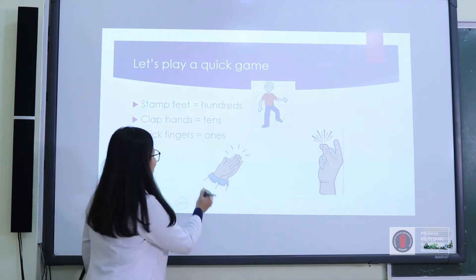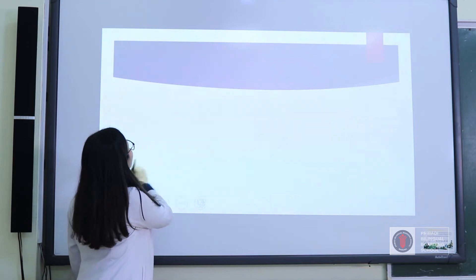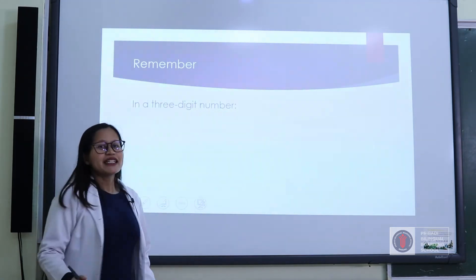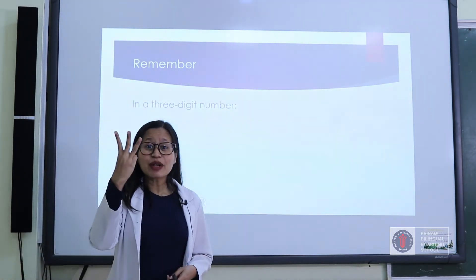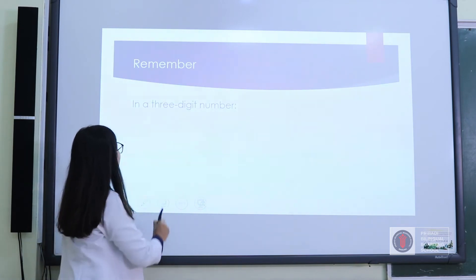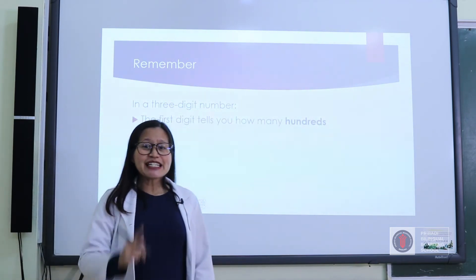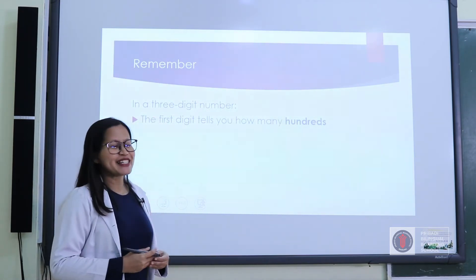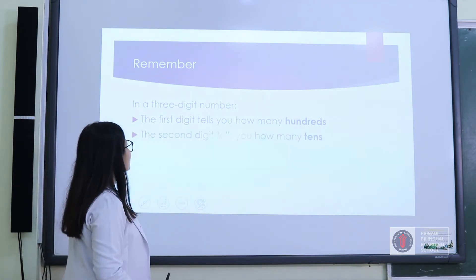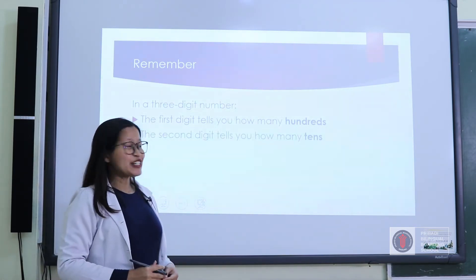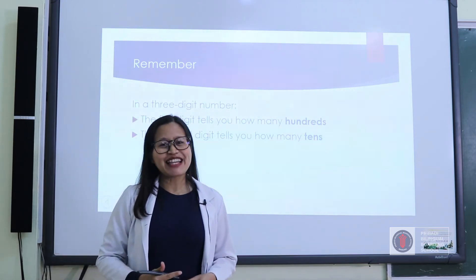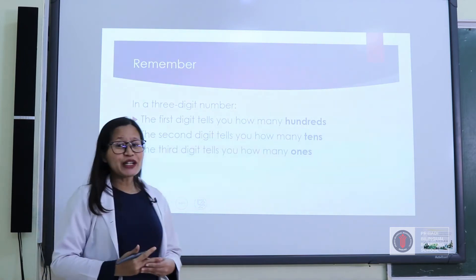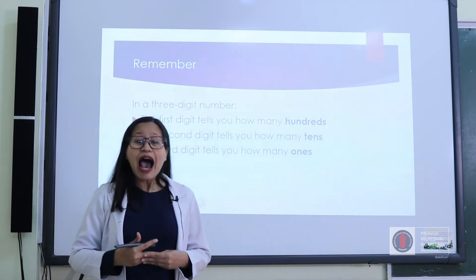Now let's see the next part. Remember, in three-digit numbers, the first digit is always telling you that it's the hundreds place. The second digit tells you how many tens. And the third digit, of course, tells you how many ones.